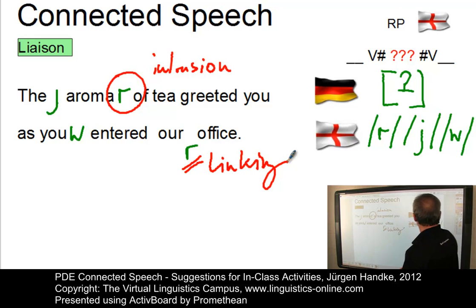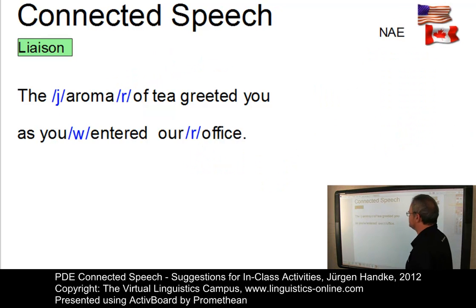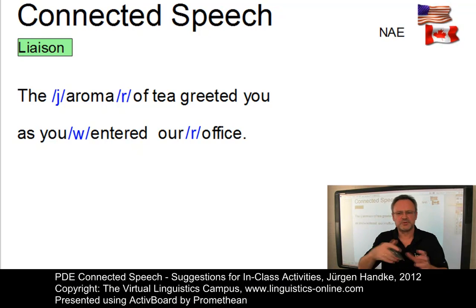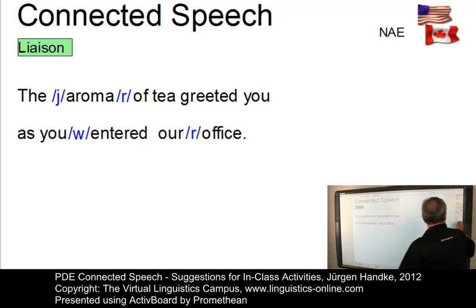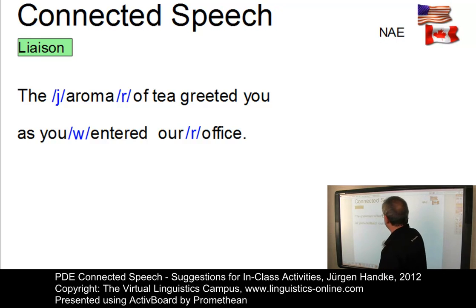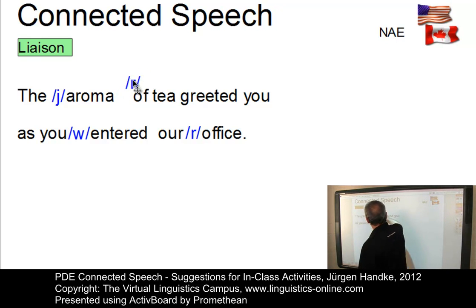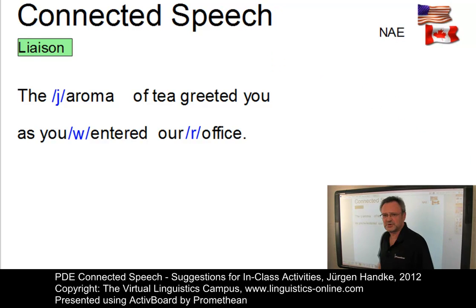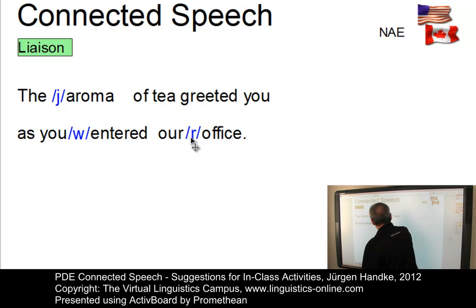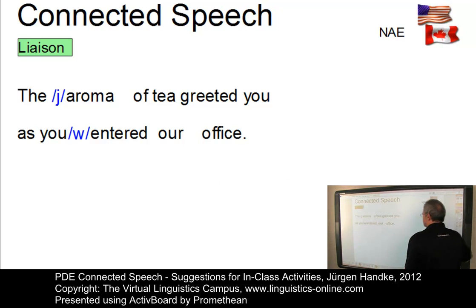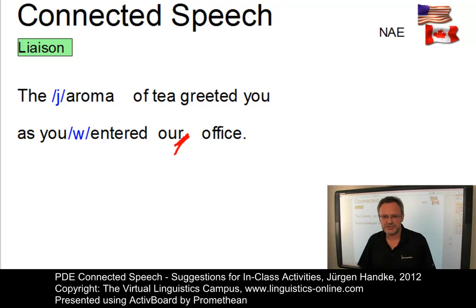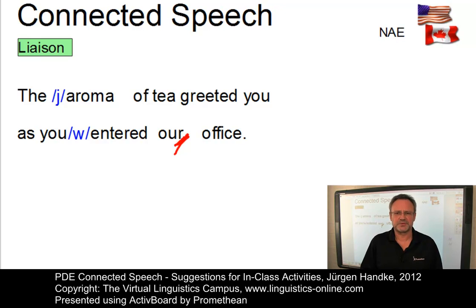Taking this RP version, you can now discuss with your students the differences between the RP version and the North American English version. In North American English, the intrusive R will disappear because it is not used in North American English, and the linking R is not an additional phoneme — it occurs automatically because of the high degree of rhoticity, and a word like 'our' already contains an R in isolation. So it would not be surprising if you use it in connected speech too.